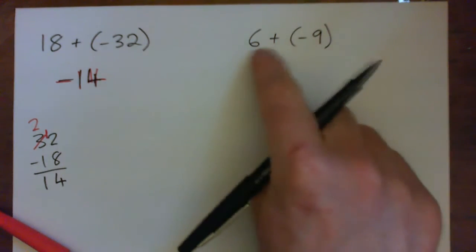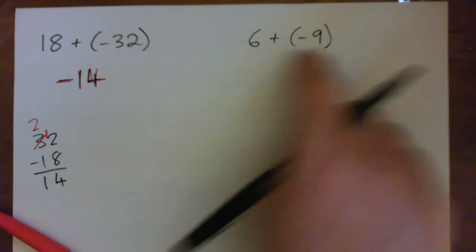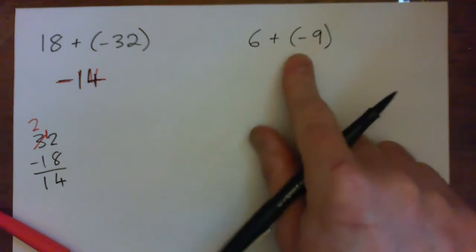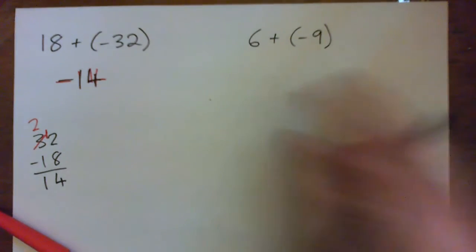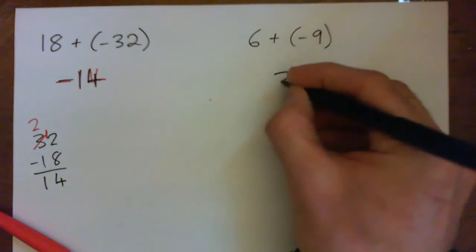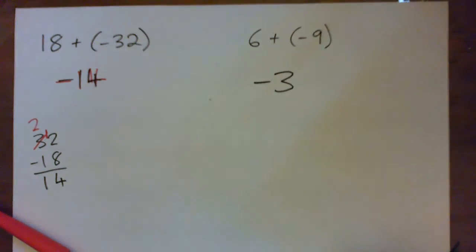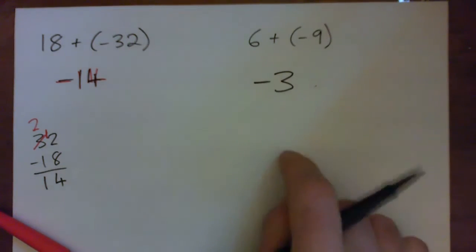This is $6 cash plus $9 of a debt. So 6 good guys and 9 bad guys leaves us with 3 bad guys, 3 negatives, or $3 in debt.